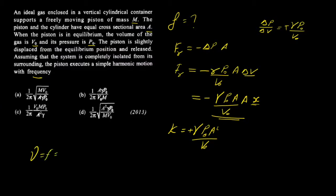Frequency is equal to one upon two pi, one upon two pi, and k by m, right? So here we put the value, k by m. Here k is one upon two pi, k is gamma P0 A squared divided by m into V0. So here the answer will come. Check which answer is correct, the answer will come.